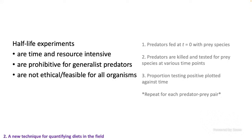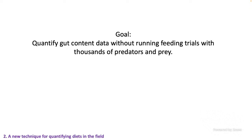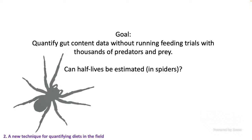Half-life experiments are also not always ethical or feasible for all organisms — maybe there's a rare spider you don't want to kill, or an uncommon prey you don't want to use for feeding experiments. So my goal was to be able to quantify gut content data without running feeding trials with thousands of predators and prey. In other words, I wanted to know if we could simply estimate half-lives. I was particularly interested in spiders because these are readily available for this kind of work and a lot of work has already been done on spider diets, especially with metabarcoding.